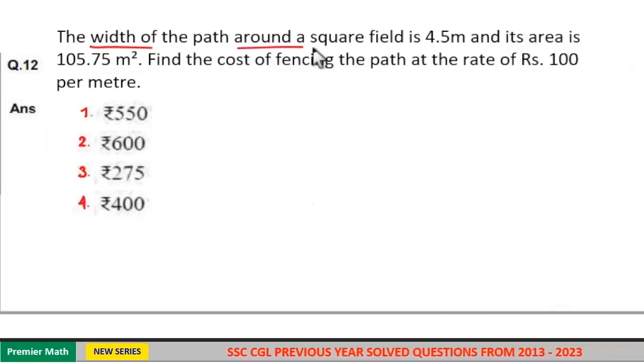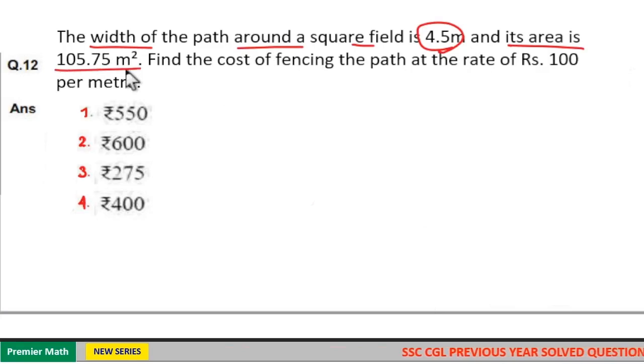The width of the path around a square field is equal to 4.5 meters and its area is 105.75 square meters. Find the cost of fencing the path at the rate of rupees 100 per meter.